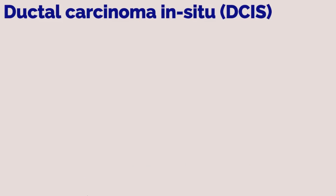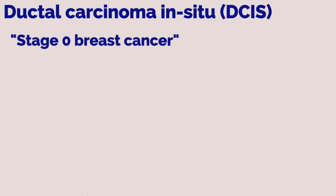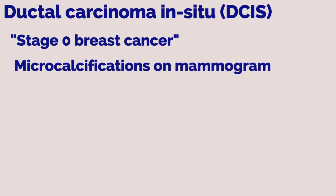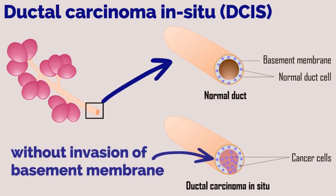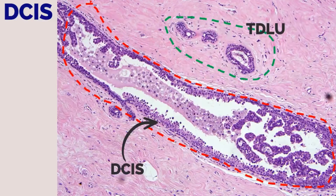Our patient's biopsy comes back as ductal carcinoma in situ, or DCIS, sometimes referred to as stage 0 cancer. This is typically diagnosed after microcalcifications are seen on mammogram. Cancer cells fill the ductal system without invading beyond the basement membrane. Unlike in LCIS, the cells are cohesive.